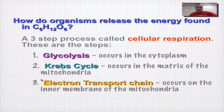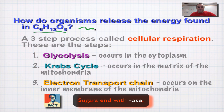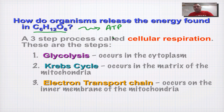Cellular respiration is a chemical process used to release the energy found in glucose — C6H12O6 — and convert it into ATP, which is the energy molecule that transfers energy from one reaction to another. If you want to learn more about ATP, go to our chapter 8 series of screencasts.